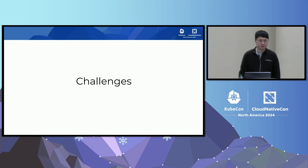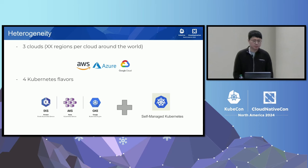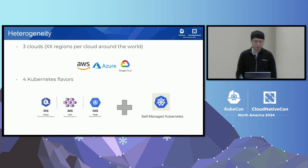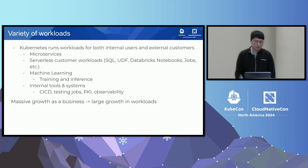Usually upgrades are considered just operational work, but we soon realized that for us it was very challenging. We run on three clouds: AWS, Azure, and Google Cloud. We have multiple regions per cloud around the world — double digit regions per cloud. And we have four different Kubernetes flavors: EKS on AWS, AKS on Azure, GKE on Google Cloud, and our self-managed Kubernetes clusters that run on all three clouds. Kubernetes runs workloads for both internal users and external customers.